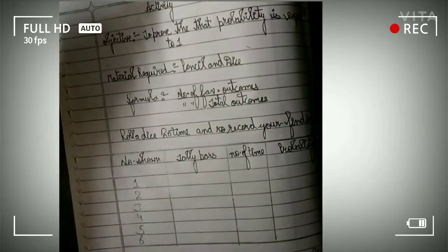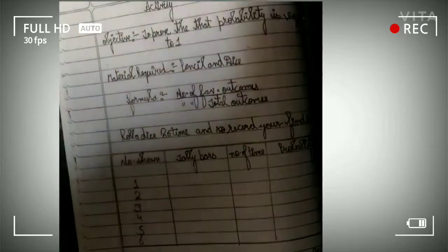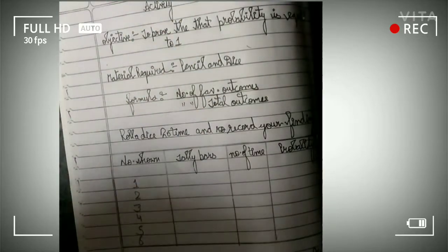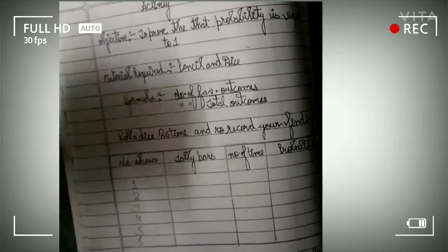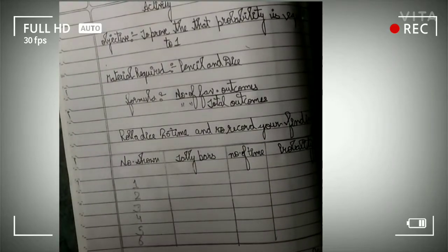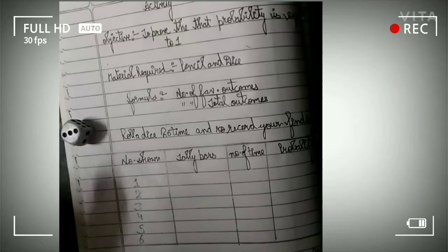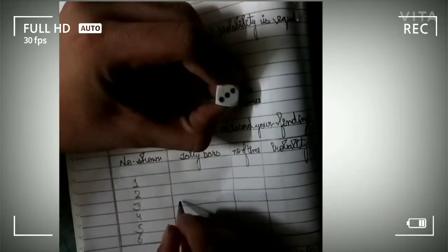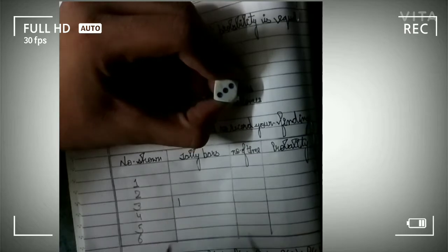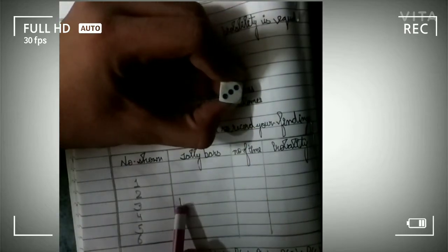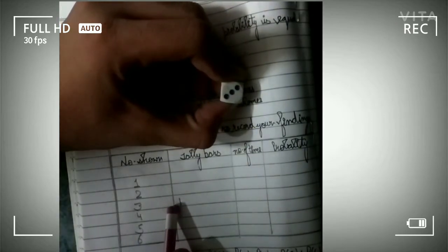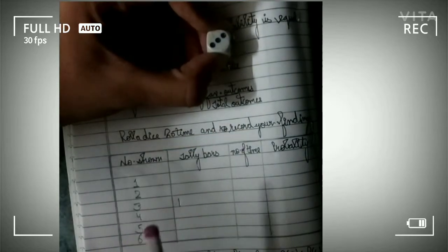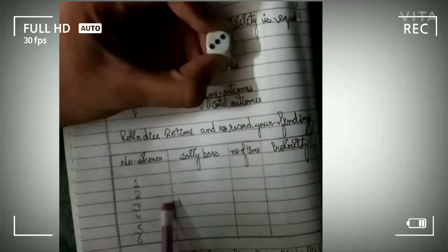Okay, so now what we have to do is throw the dice 20 times and we have to note the number of times that faces came. So let's throw the dice 20 times and we will calculate the number of times that faces came and then we will fill this.